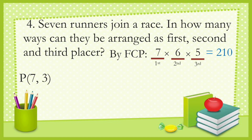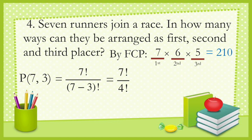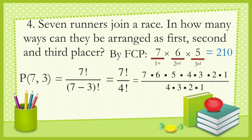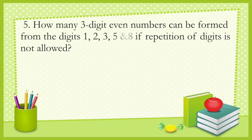Using the formula, that is P(7, 3), which equals 7 factorial all over (7 minus 3) factorial, or four factorial. Seven factorial is 7 × 6 × 5 × 4 down to one, all over 4 × 3 × 2 × 1. Crossing out the same numbers, the remaining are 7 × 6 × 5, which equals 210.